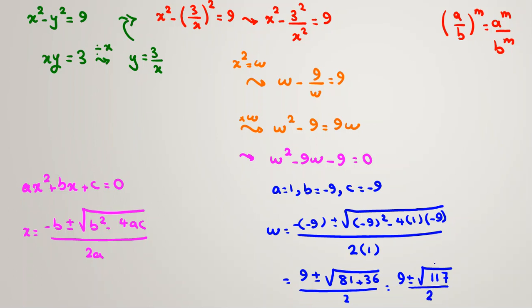We can simplify the square root of 117: since 117 = 9 × 13, we get √117 = 3√13. So w equals 9 plus or minus 3√13, all over 2.